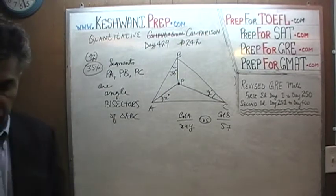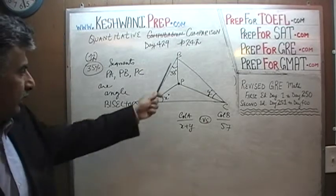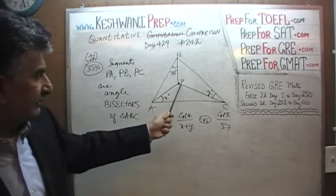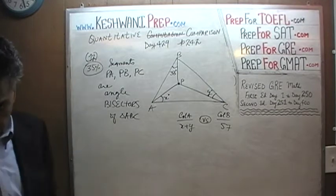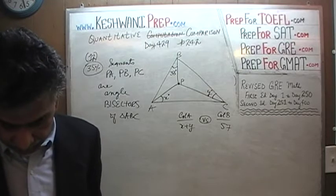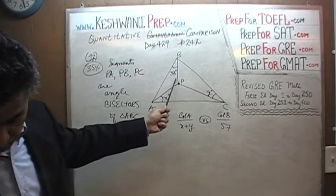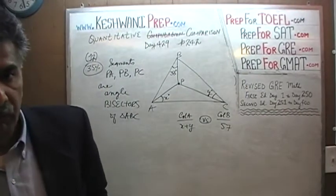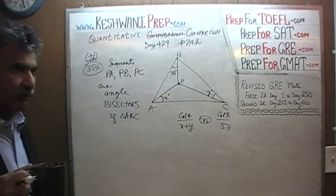One more time: we have triangle ABC, point P in the middle, and we draw segments PA, PB, and PC — all three are angle bisectors of triangle ABC. One angle is X degrees, one is Y degrees, one is 33 degrees. We are asked to compare X plus Y versus 57. Pause the video, solve it yourself, then compare your work against what we do together.